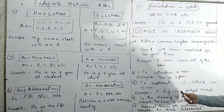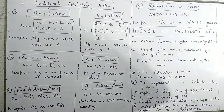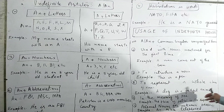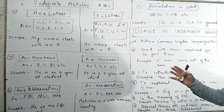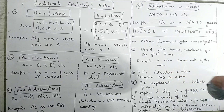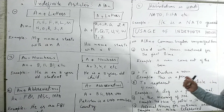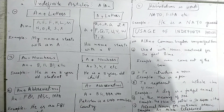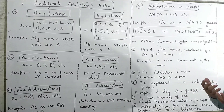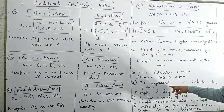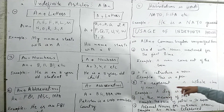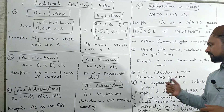Third use: to refer to a whole class or kind. For example: A dog is A faithful animal. Here 'A dog' refers to dogs in general — it is used in an indefinite, general sense.